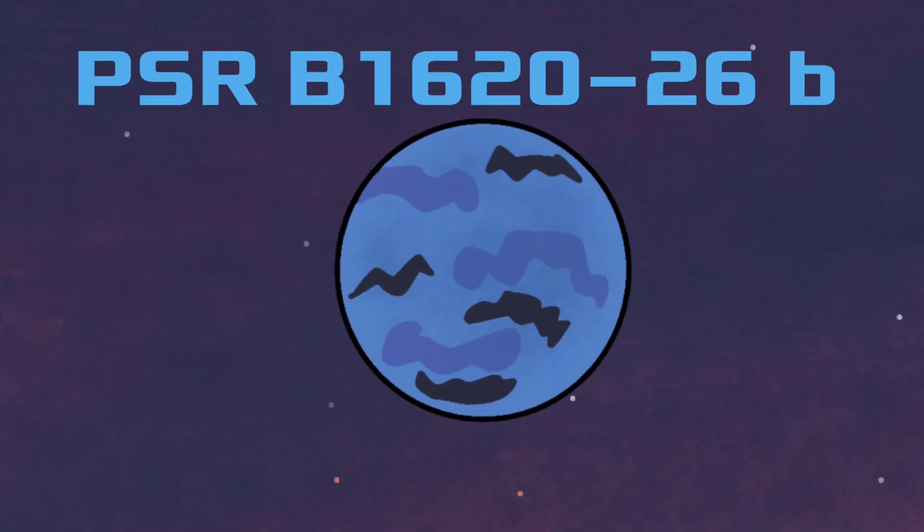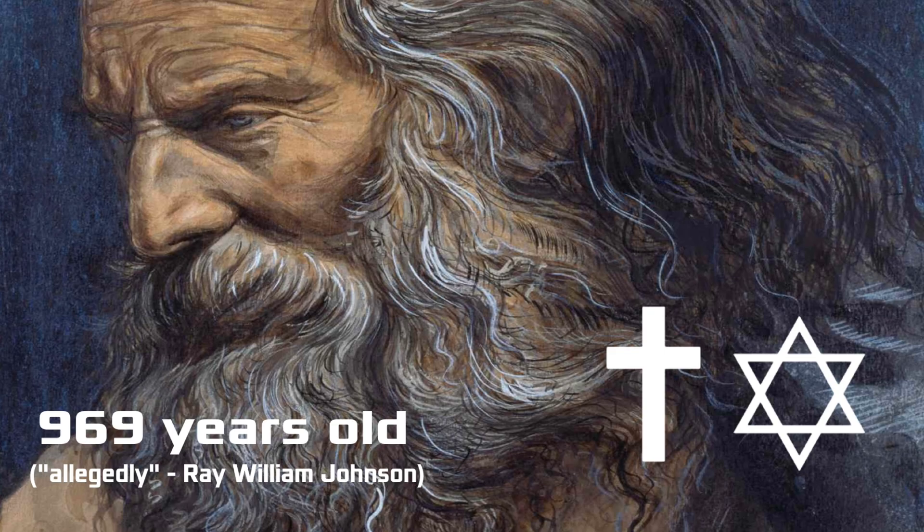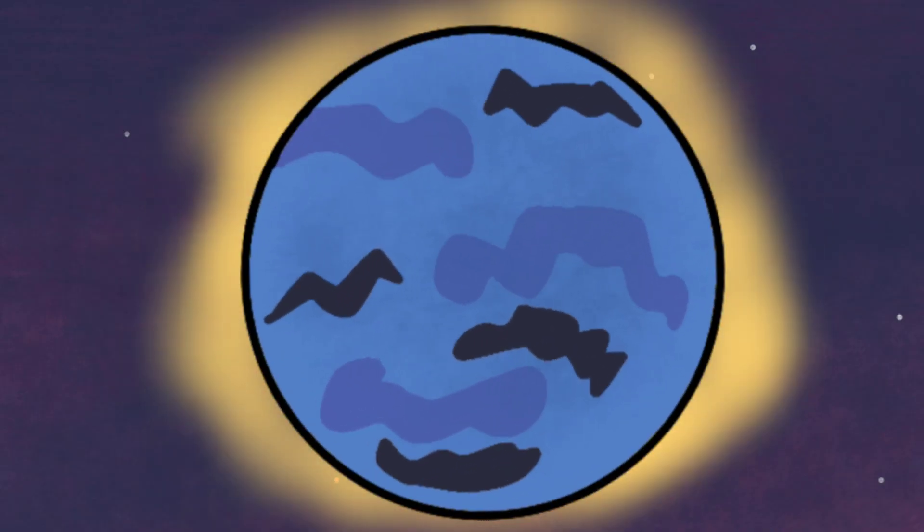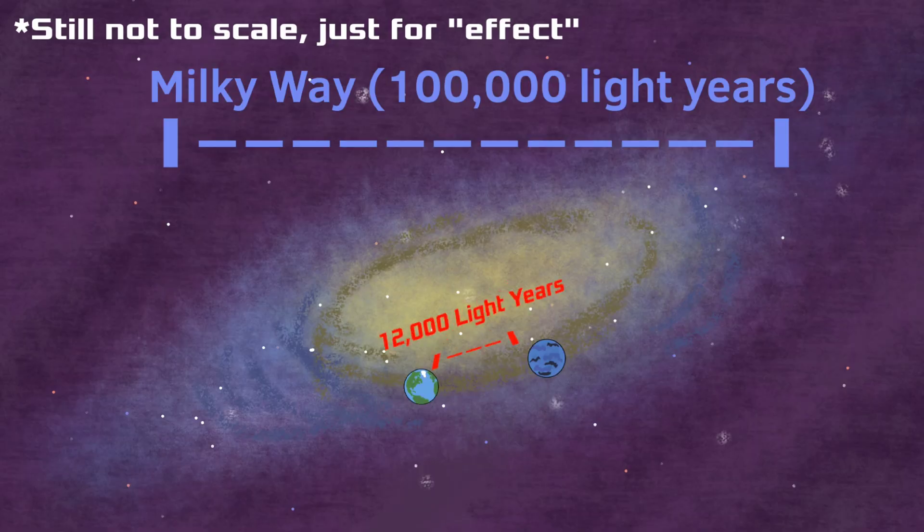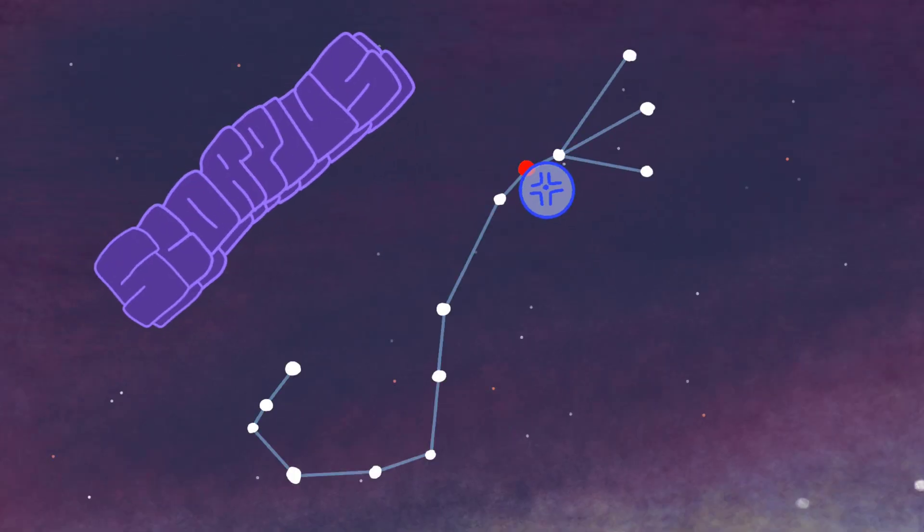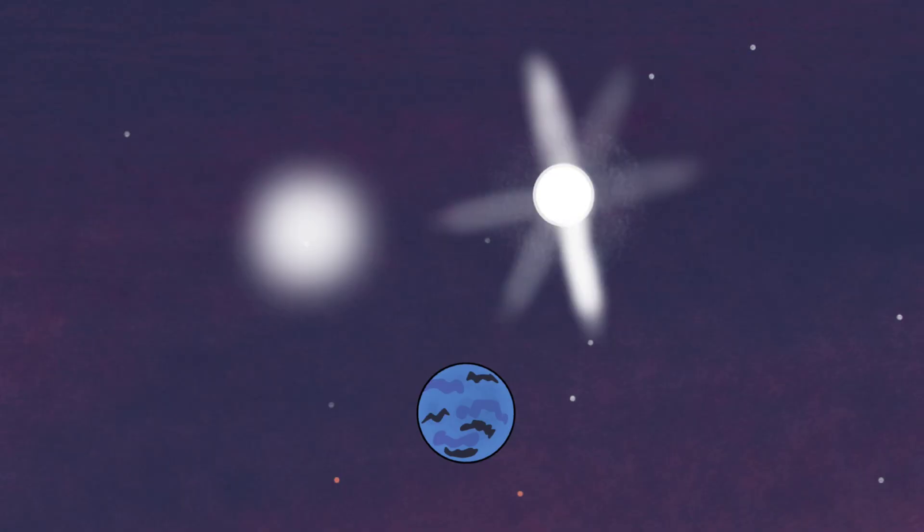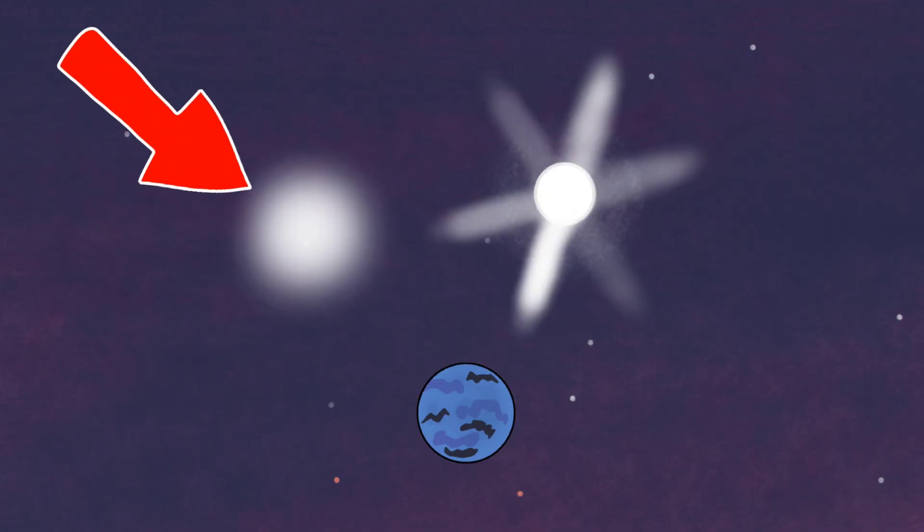PSR B1620 nicknamed Methuselah, after the longest living biblical figure according to various religions, is one of, if not the oldest exoplanets discovered, believed to be over 12 billion years old. Located over 12,000 light years away in the constellation of Scorpius to the right of Antares, Methuselah orbits a set of binary stars, one being a white dwarf and the other being a pulsar.